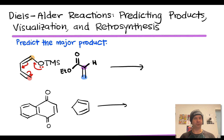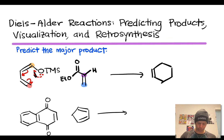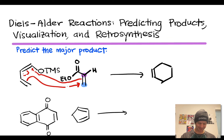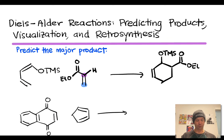Now we can start drawing the product. We begin with a cyclohexene skeleton, recognizing the electron flow in the 4+2: one pi bond forms a new sigma bond here, the other pi bond comes around to form a bond there, and those electrons go to create a new pi bond. That gives us two new single bonds and one new double bond. We then add substituents: the OTMS group at one carbon, and the ester group at the adjacent carbon — consistent with our earlier regiochemical analysis.